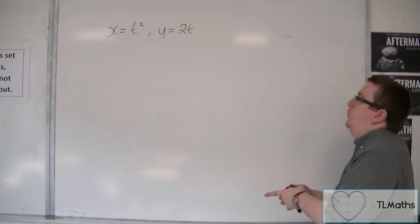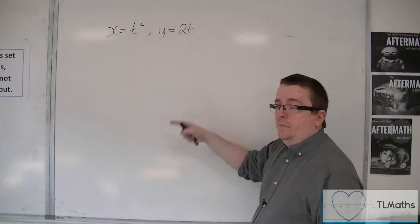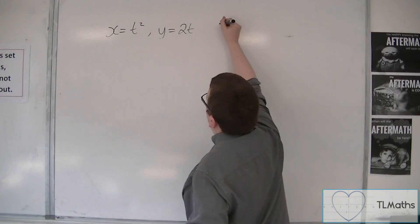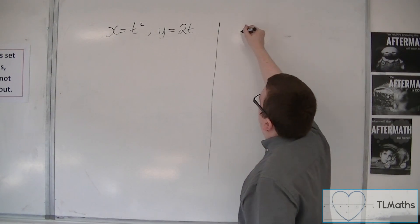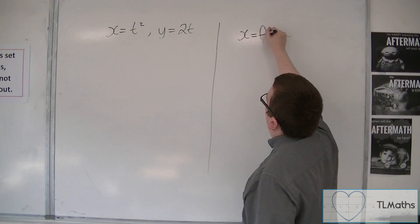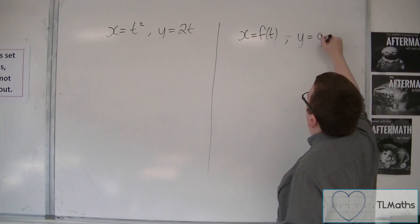Now in general, we can't go from the parametric equations to the Cartesian form. So there must be another way of doing it. So if you have x equal to a function of t, and y equal to another function of t...